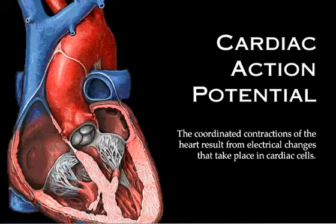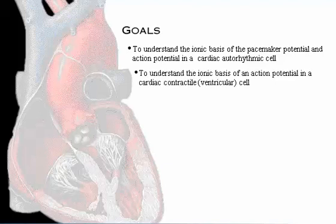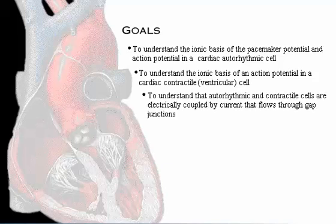The coordinated contractions of the heart result from electrical changes that take place in cardiac cells. Your goals for learning are to understand the ionic basis of the pacemaker potential and the action potential in a cardiac autorhythmic cell, to understand the ionic basis of an action potential in a cardiac contractile cell, and to understand that autorhythmic and contractile cells are electrically coupled by current that flows through gap junctions.